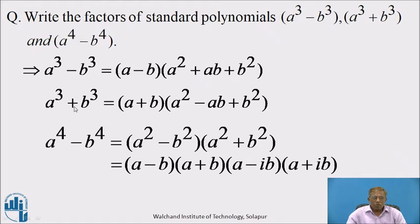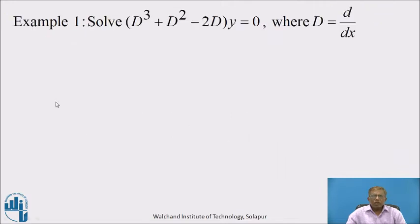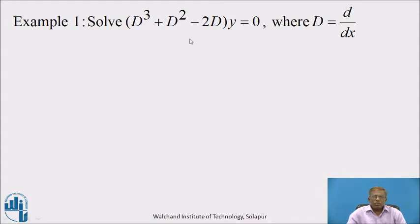But these are now essential to find the roots of the auxiliary equation for some examples. Now let us start with example 1, because in the previous session we discussed how to write a complementary function for a given linear differential equation. Example 1: solve the differential equation (D³ + D² − 2D) · y = 0, where D = d/dx.